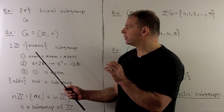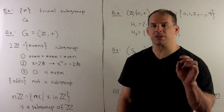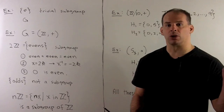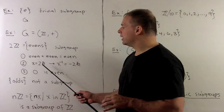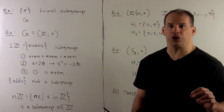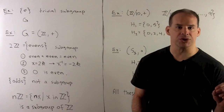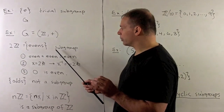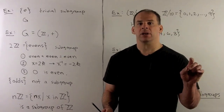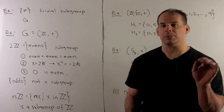For concrete examples, first consider the integers under addition. If we take the subset of even integers, we can verify the subgroup conditions. An even plus an even gives another even integer, so we're closed under addition. Any even integer can be written as 2K; its inverse is minus 2K, which is also even, so we're closed under inverses. The identity is 0, which is also even. So the even integers form a subgroup. Note that odd integers are not a subgroup: an odd plus an odd gives an even, so it's not closed under addition, and 0 is not in the subset.